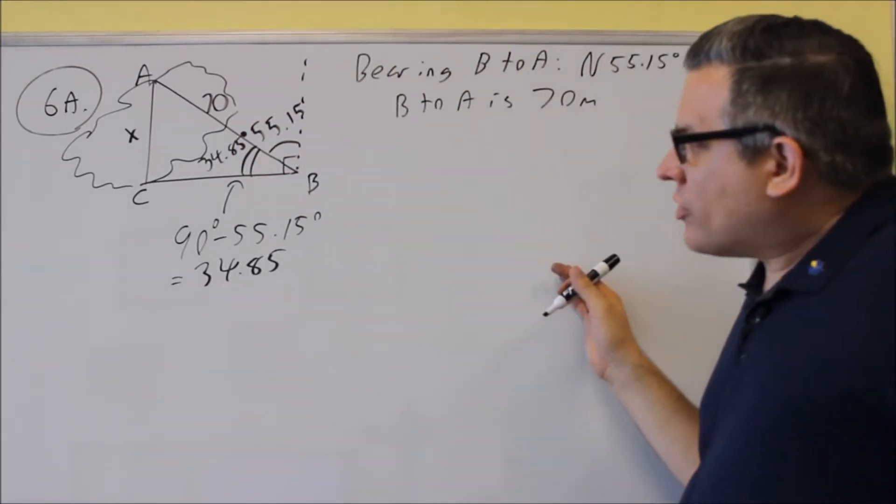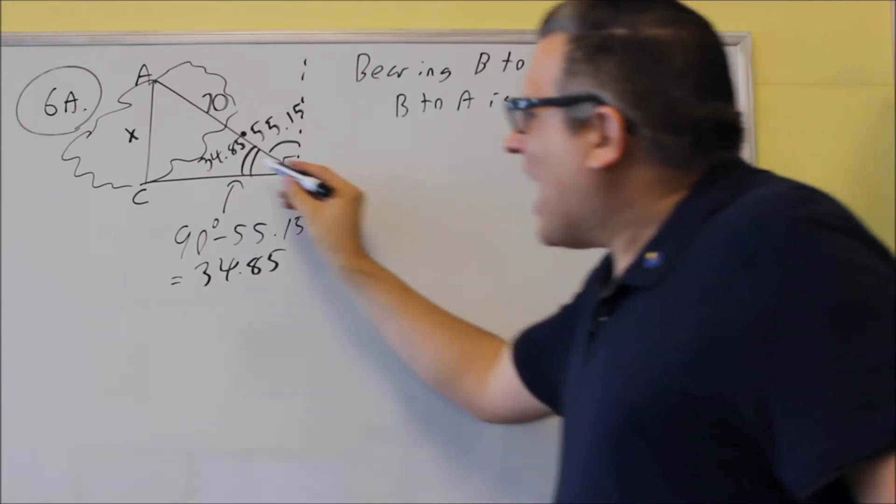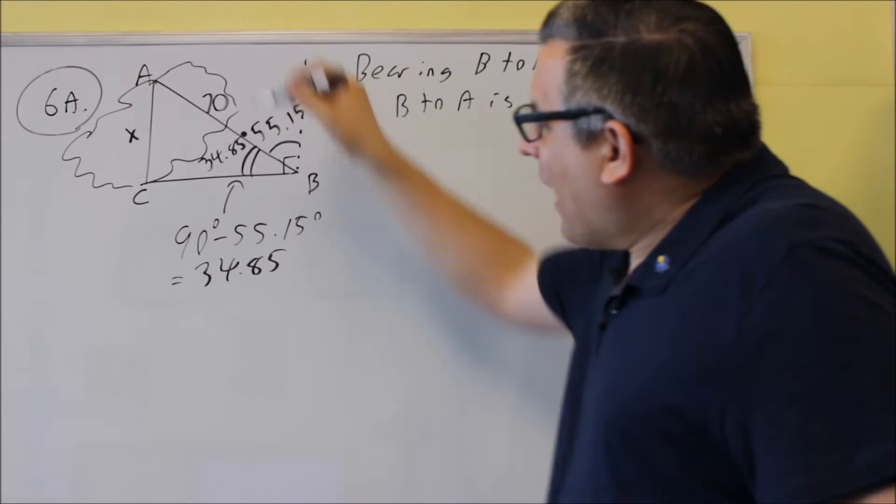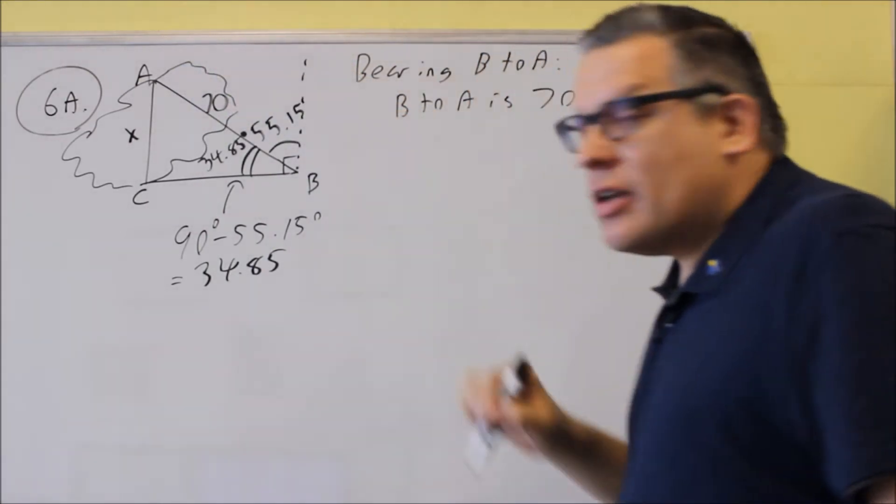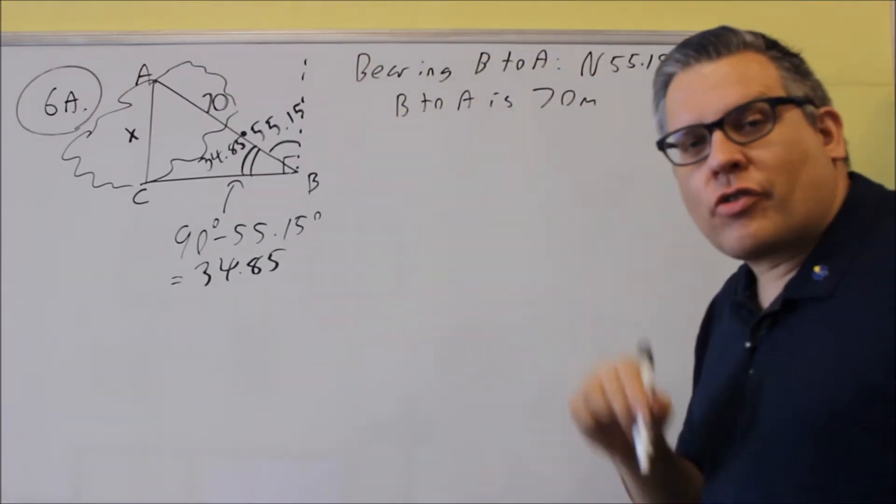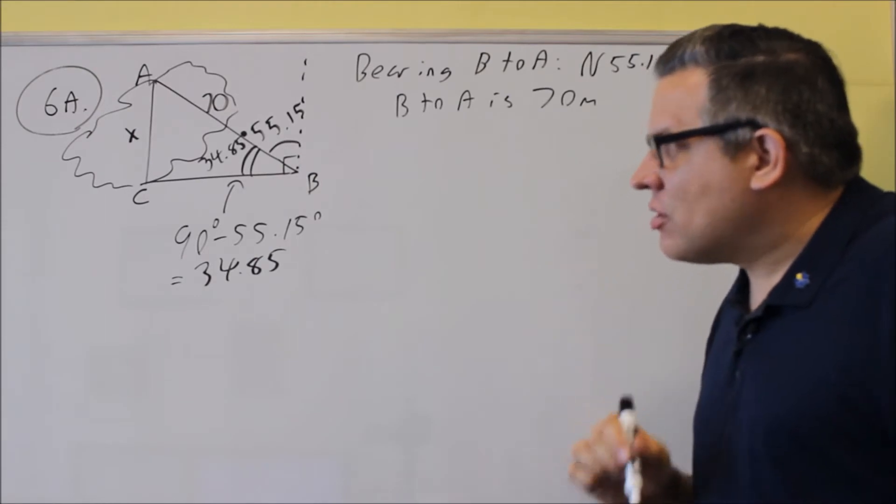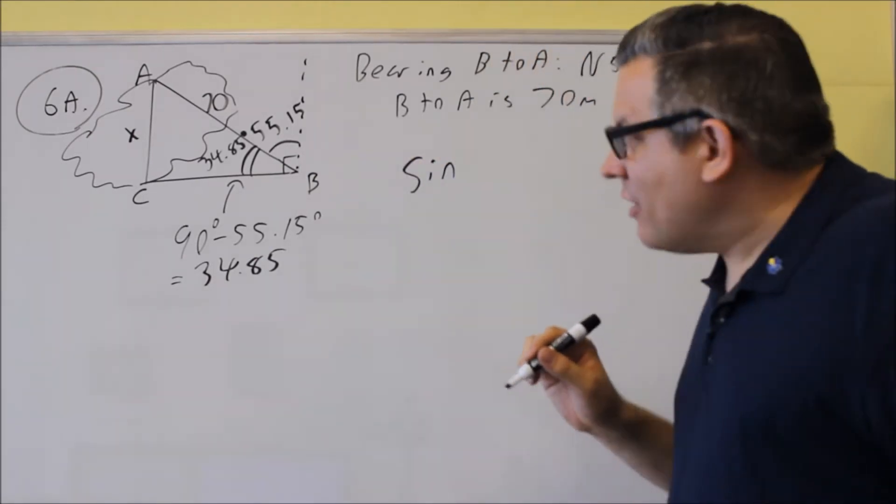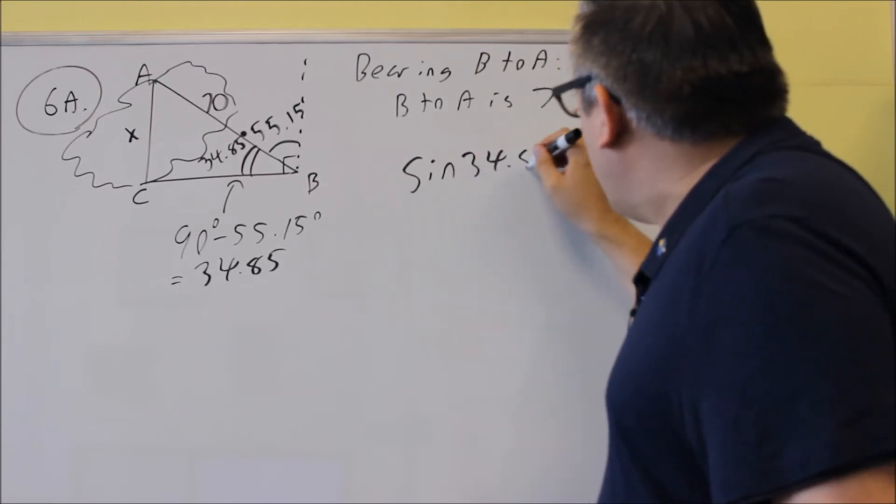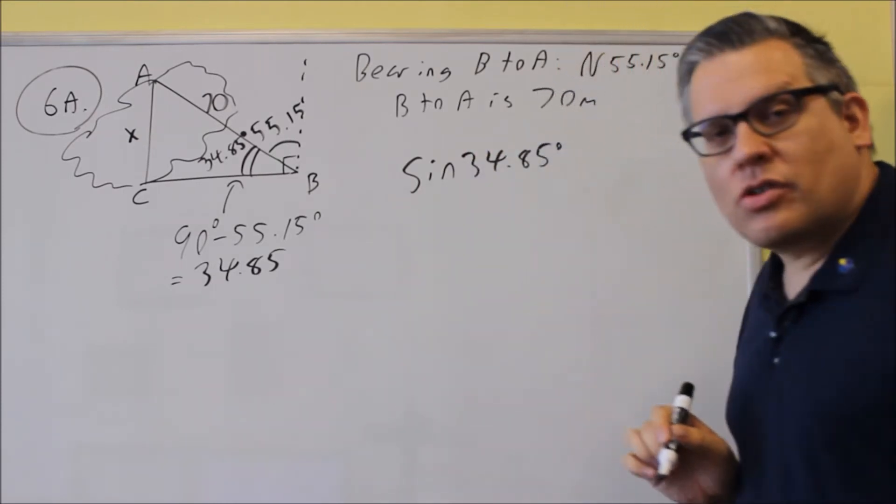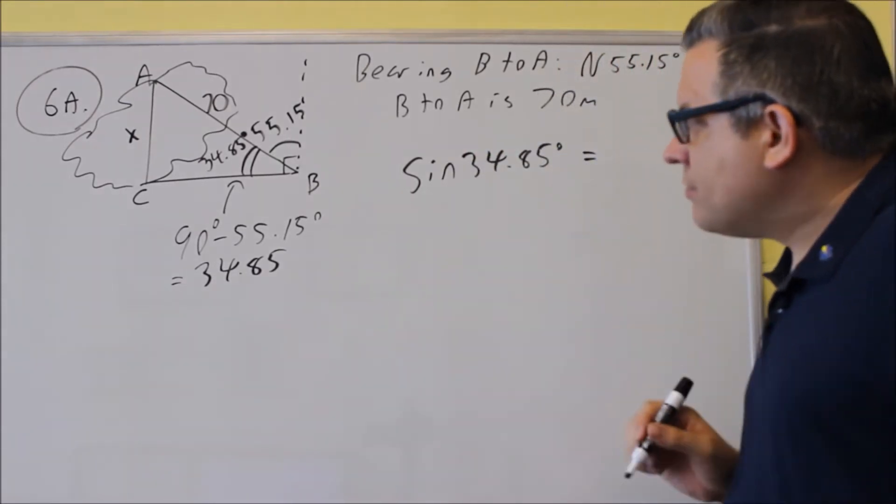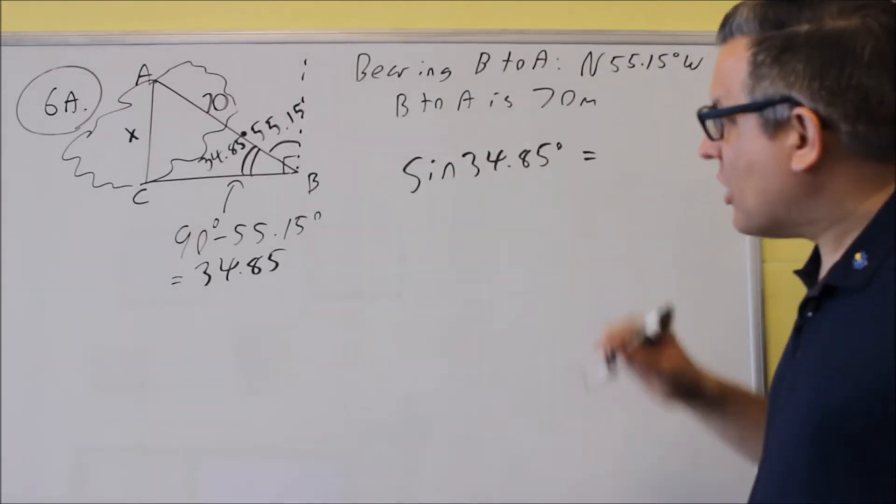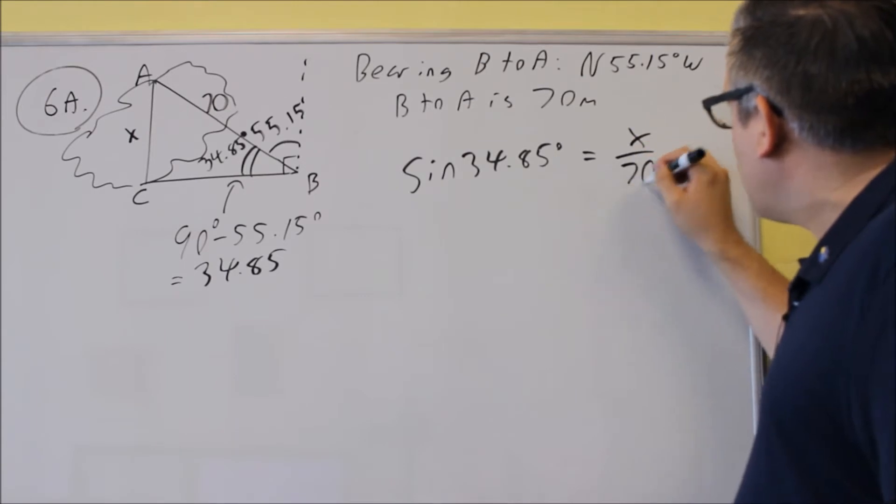When we set up the triangle, we want to set up a trig function that relates the opposite because X is what we're trying to find and the one that's given is hypotenuse. So the trig function that relates the opposite and hypotenuse would be sine. So I'm going to do sine 34.85 degrees is going to equal, we use the trig definition, opposite over hypotenuse. Opposite is X over hypotenuse, which is 70.